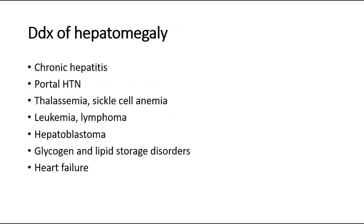In another scenario where the liver is palpable but the spleen is not, the differential diagnosis of hepatomegaly includes: chronic hepatitis, portal hypertension, thalassemia or sickle cell anemia, leukemia or lymphoma, hepatoblastoma — which is a tumor in the liver — and glycogen and lipid storage disorders causing hepatomegaly. That is all for this video. Thank you.